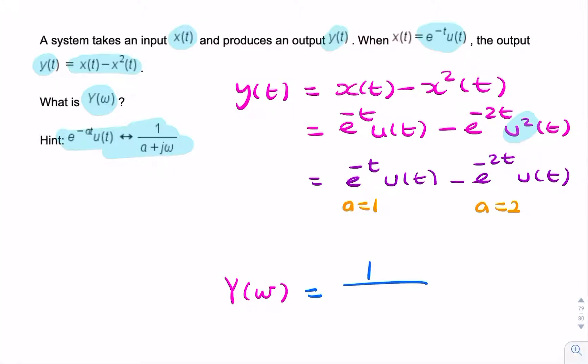That gives us our Fourier transform: 1/(1 + jω) minus 1/(2 + jω). The 1 and the 2 are the values of a here.